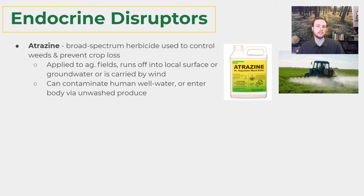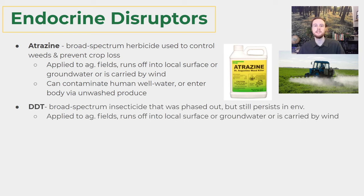So these endocrine disruptors can target humans as well. Another example is DDT, a broad-spectrum insecticide. Thankfully it's not used widely in the developed world anymore, because its effects on humans and other organisms were discovered in the 1960s — which for many people kicked off the modern environmentalist movement. Even though it's no longer applied, DDT can still be found because it is so persistent in sediments of aquatic ecosystems and in agricultural soils where it was applied decades ago, yet it persists in the environment for such a long time that it can still be detected.